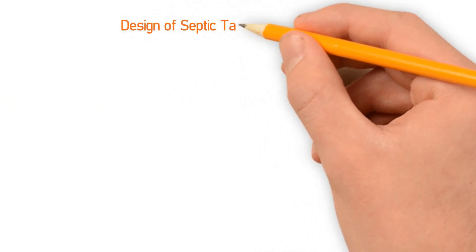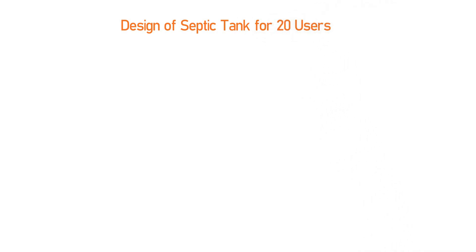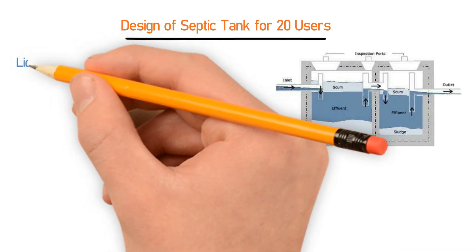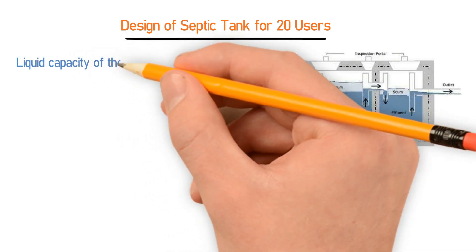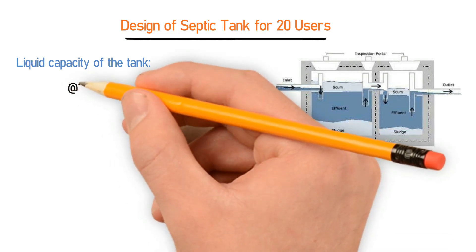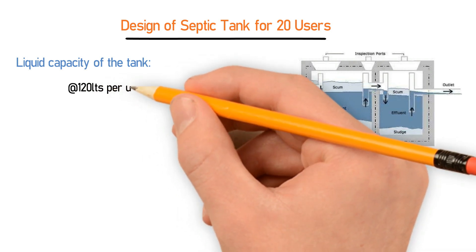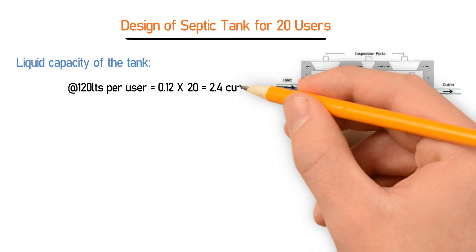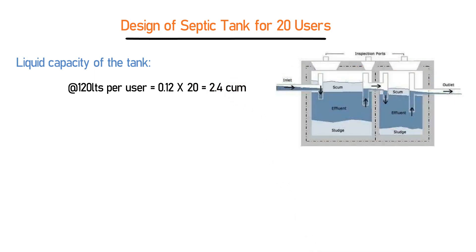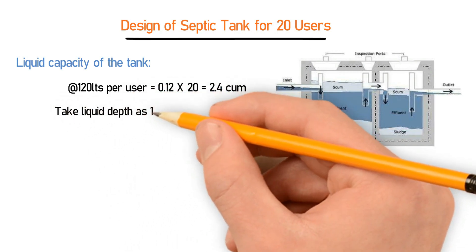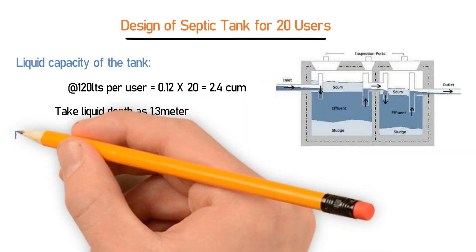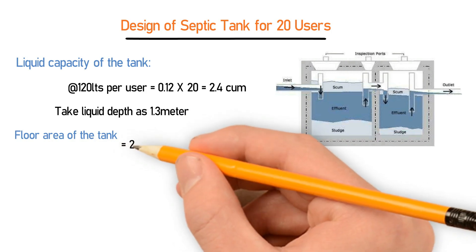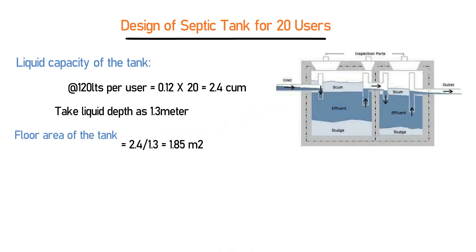Now let's design a septic tank for 20 users. The liquid capacity per user is taken as 120 liters, so the total capacity is 0.12 × 20 = 2.4 cubic meters. Taking a liquid depth of 1.3 m, the floor area of the tank is 2.4 ÷ 1.3 = 1.85 square meters.